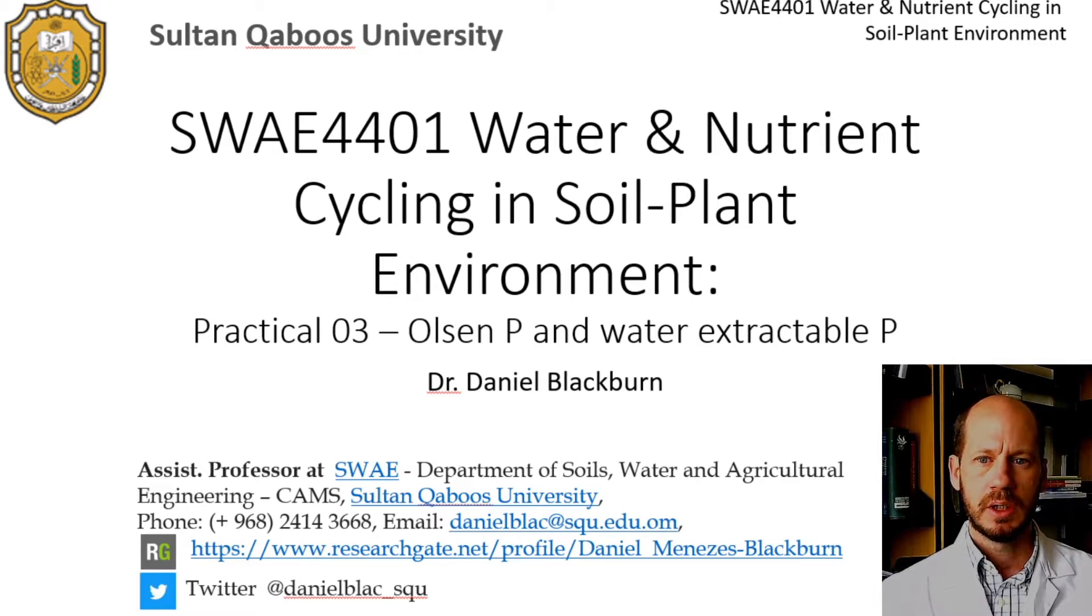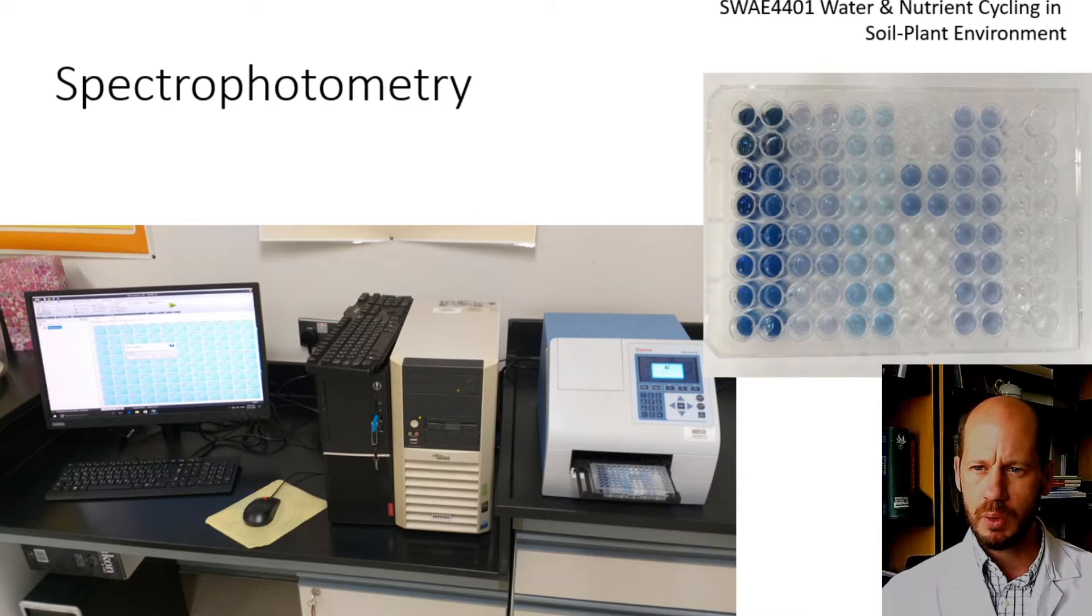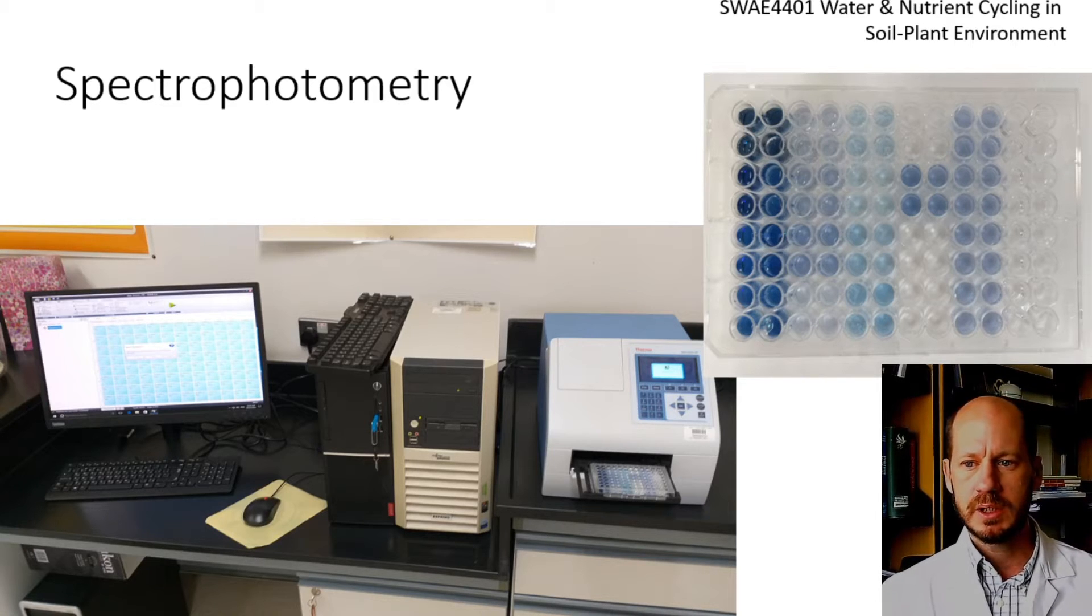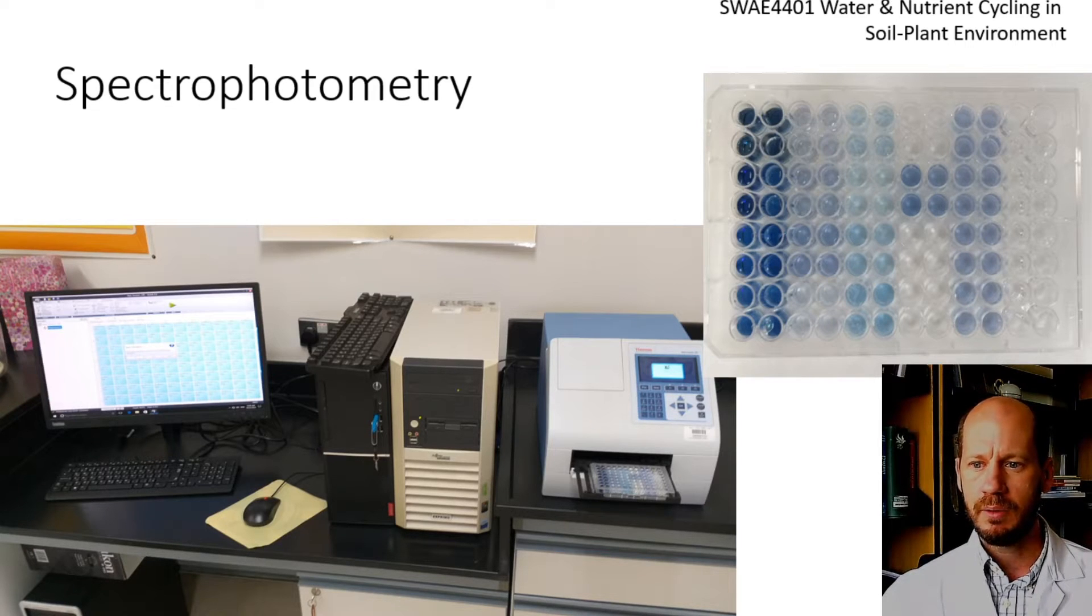In short, we are going to use a spectrophotometer like the one here on the bottom. This is a plate reader spectrophotometer, and here on the left is just a computer that controls the plate reader. The plate reader shoots a light with a specific wavelength through the samples on a microplate like the one here, and measures how much of this light goes through and how much is absorbed in the sample.